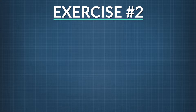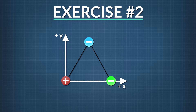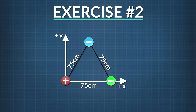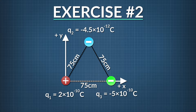Now let's study another example, where this time three charges are arranged at the corners of an equilateral triangle with sides 75 cm long. We're given the charges of q1, q2, and q3. We want to know what is the net electric force on q2, the charge at the top of the triangle. The net electric force on q2 will be the sum of the forces q1 and q3 exert on q2.